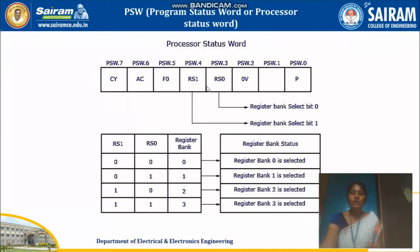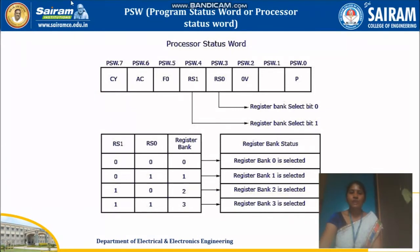These two bits are responsible for selecting your register bank among the four banks of registers. F0 is your user-defined flag. AC is nothing but your auxiliary carry, and CY is your carry flag. So using this program status word, it is possible for us to identify the parity bit, whether the auxiliary carry bit is set or not, whether the carry bit is set or not, the user-defined flag, and to select the register bank. The PSW is of 8 bits.